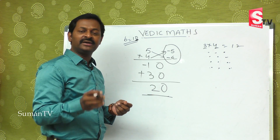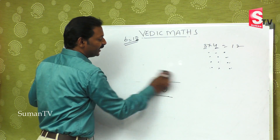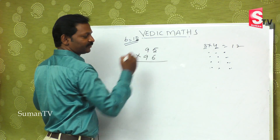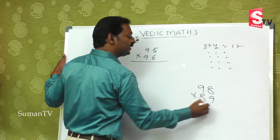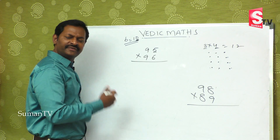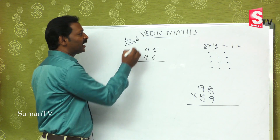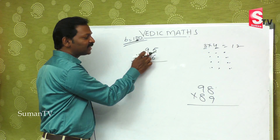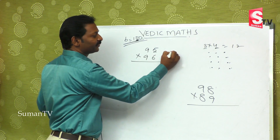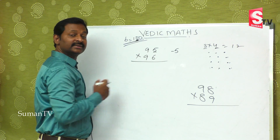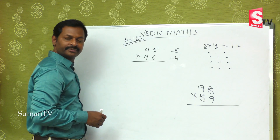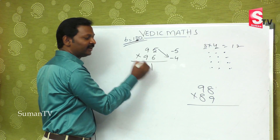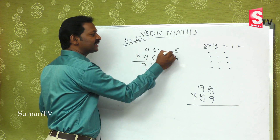So it may be a small number, it may be a big number, but this method is definitely useful for you. Suppose if I go to numbers like 95 multiplied by 96, or 98 multiplied by 89 — two different numbers. But if you look at the 90s or 80s, you can see the base is 100, because they are very close to 100. So 100 minus 95 is minus 5, and 100 minus 96 is minus 4. So: 95 minus 4 is 91, and 96 minus 5 is also 91.